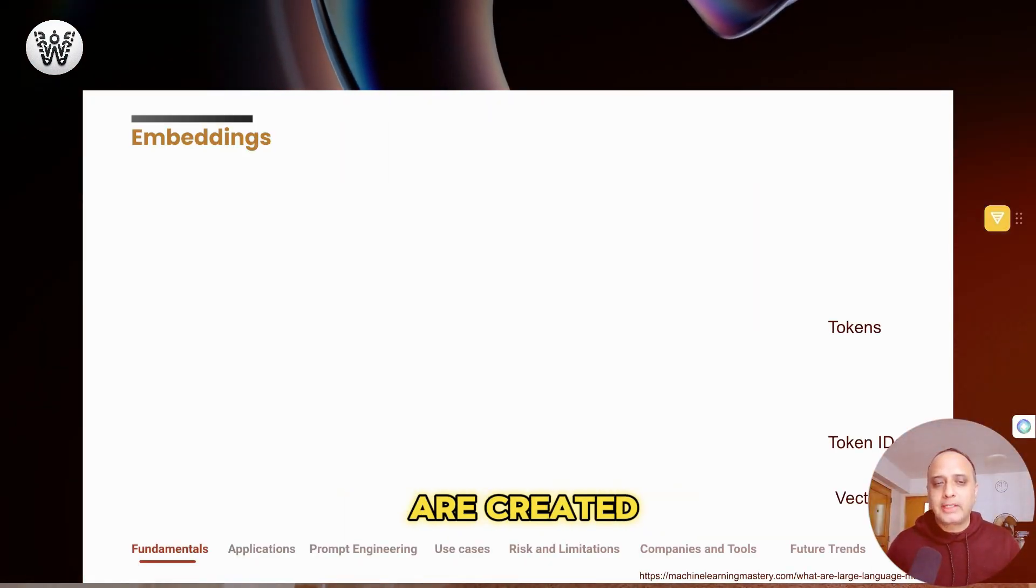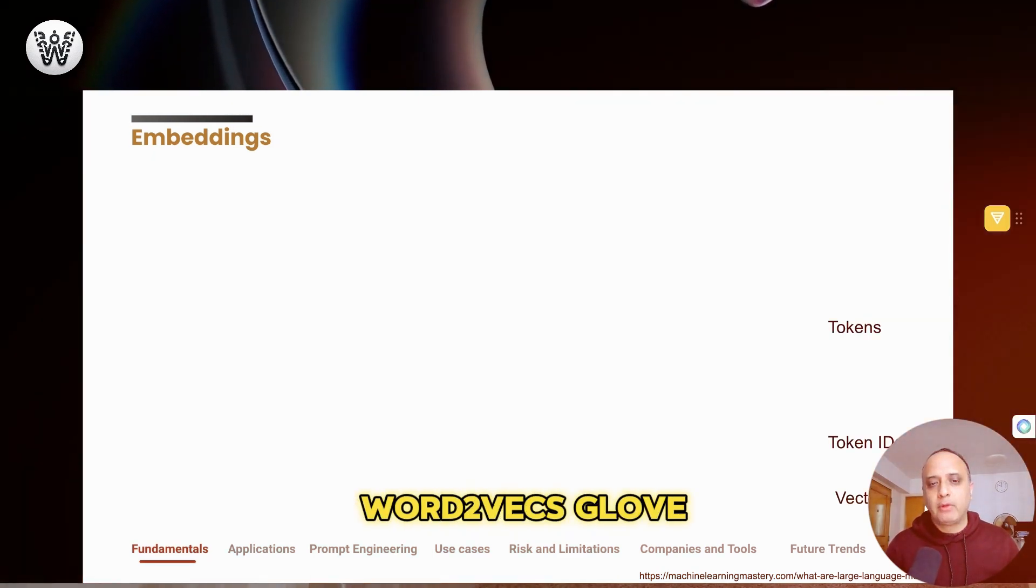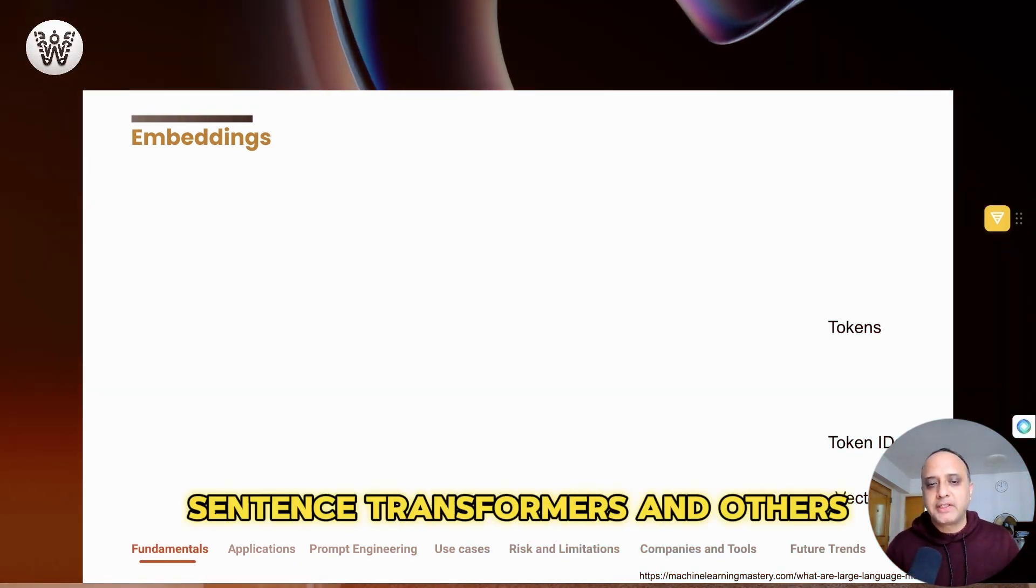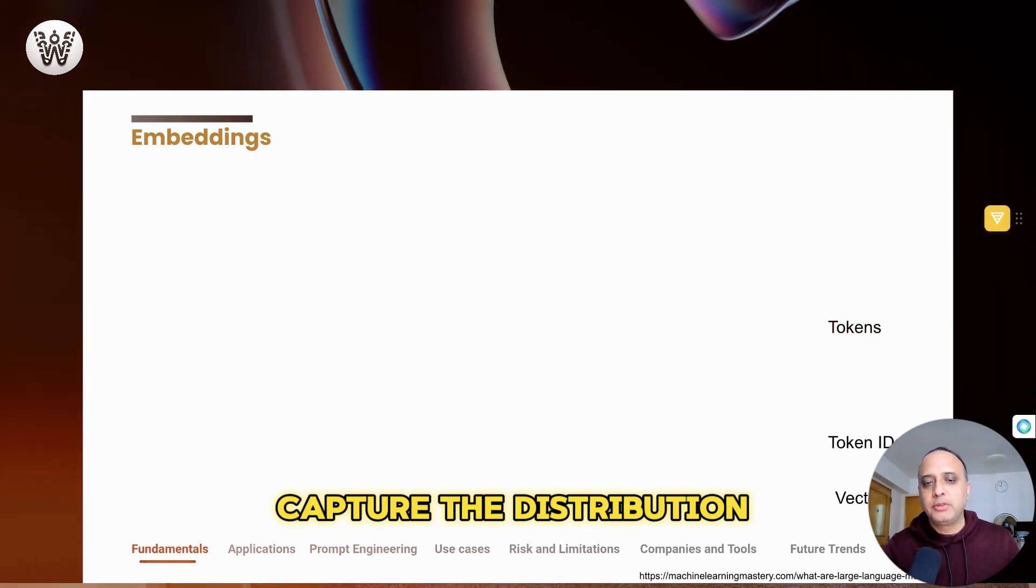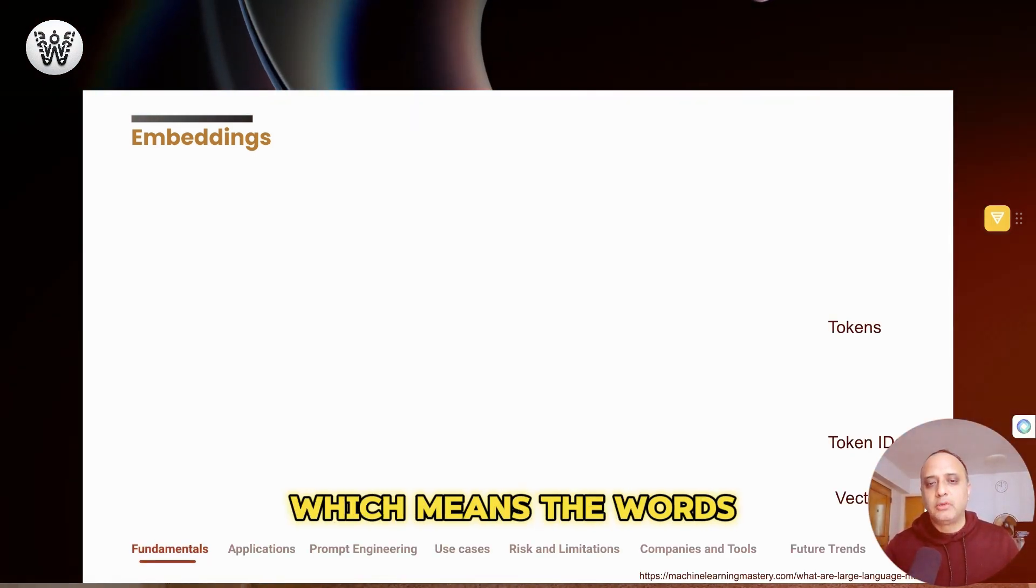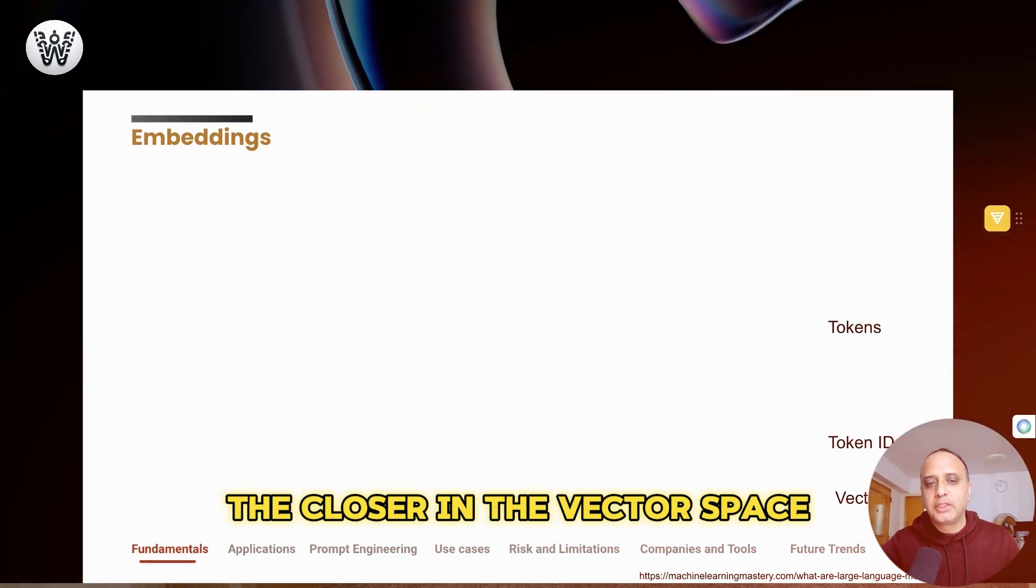Word embeddings or word vectors are created using another special family of models. For example, word2vec, glove, fast text, sentence transformers, and others. These embeddings aim to capture the distributional similarity of words, which means the words appearing in similar contexts are represented as vectors that are closer in the vector space.